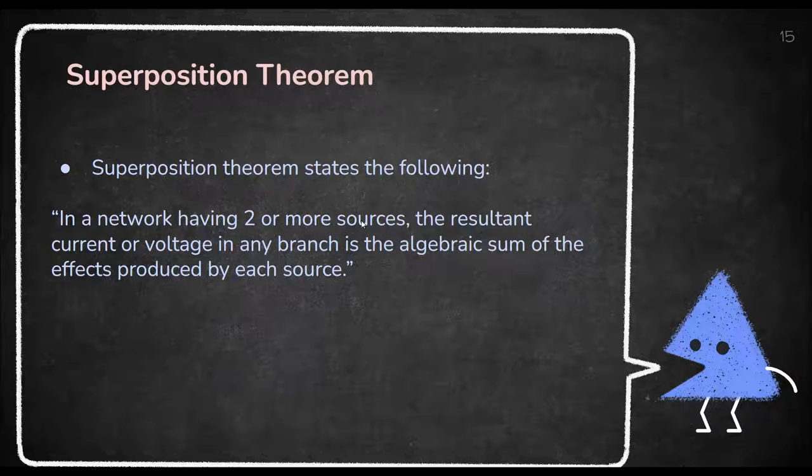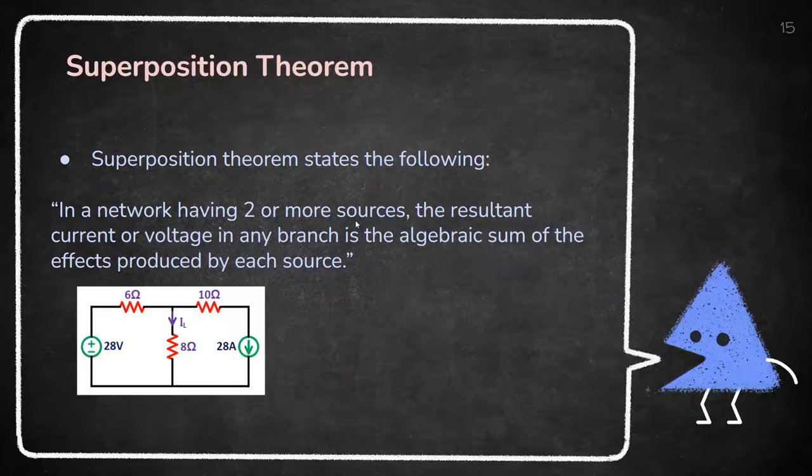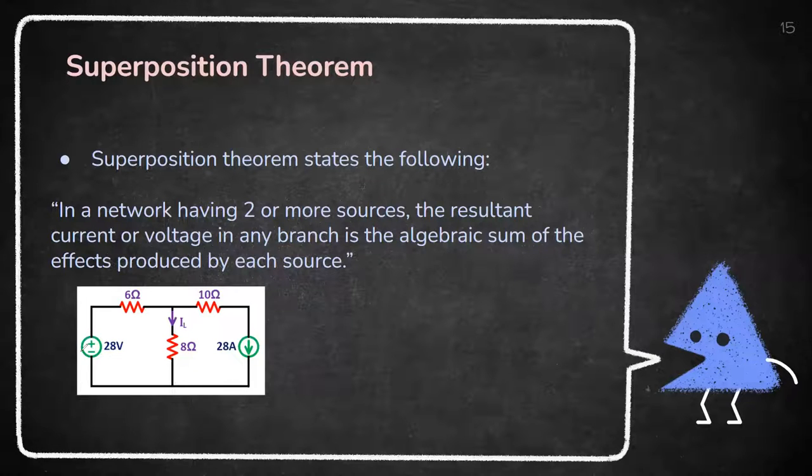The theorem states that in a network having two or more sources, the resultant current or voltage in any branch is the algebraic sum of the effects produced by each source. This is what is known as superposition theorem. Now I think we should take a numerical and see how it works. This is one network. In this network you can see two sources - this is the first source, this is the second source.